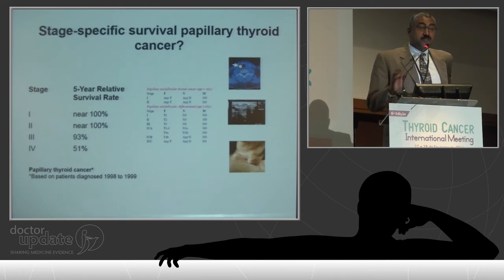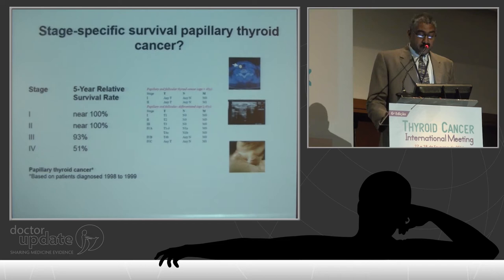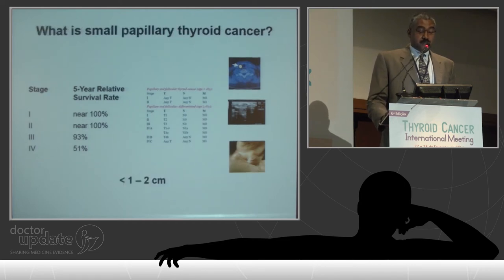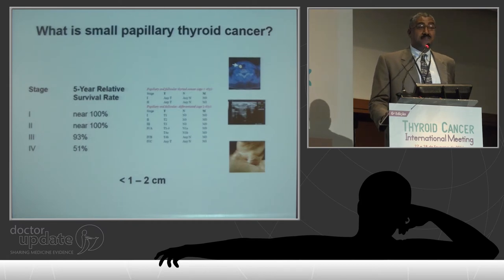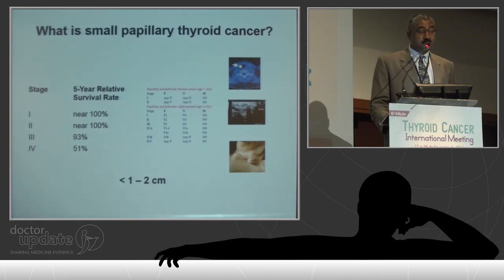Small papillary thyroid cancer refers to stage one papillary thyroid cancer, with near 100% life expectancy. This brings up the question: why are we treating these patients? I'm going to focus my talk on active surveillance of tumors that are microcarcinoma — one centimeter or less. As some have suggested, perhaps you could watch patients with papillary thyroid cancer that are less than two centimeters.